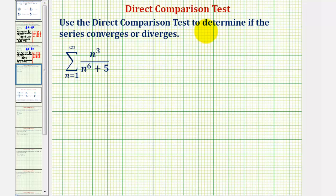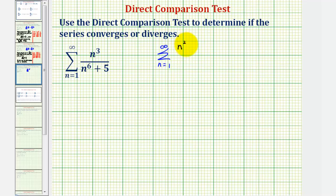We want to use the direct comparison test to determine if the given series converges or diverges. We'll begin by determining what series we'll use to compare to the given series. Notice how the given series resembles the series where we'd have the summation from n equals one to infinity of just n to the third divided by n to the sixth, which simplifies to the summation from n equals one to infinity of one divided by n to the third.